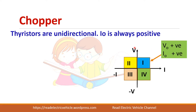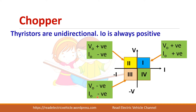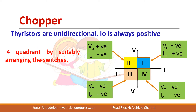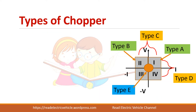In the first quadrant, voltage and current both should be positive. If current is negative and voltage is positive, it will be in the second quadrant. The third quadrant is where both voltage and current are negative. In the fourth quadrant, voltage alone will be negative while current will be positive. You can change the switch position or use a different number of switches to make one chopper operate in all four quadrants.